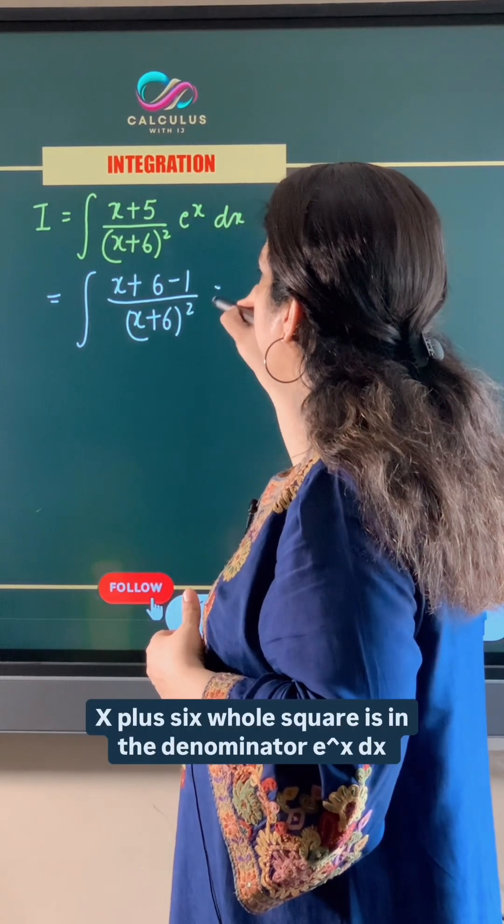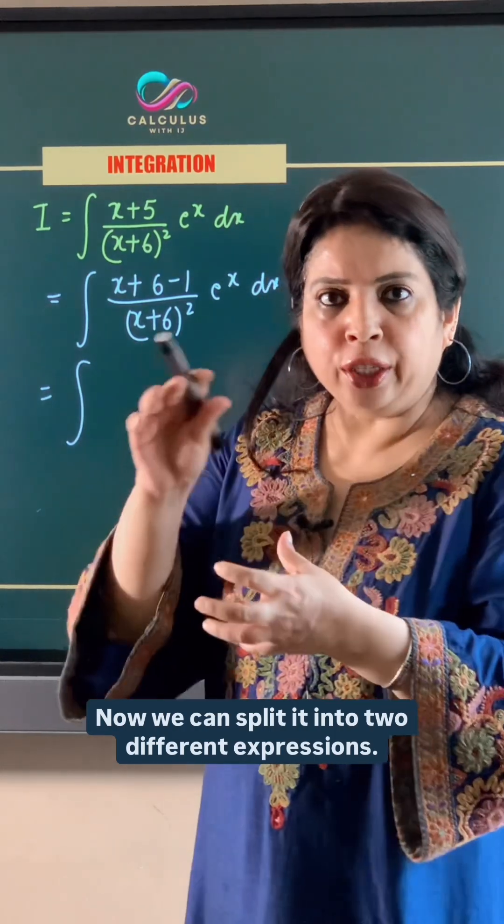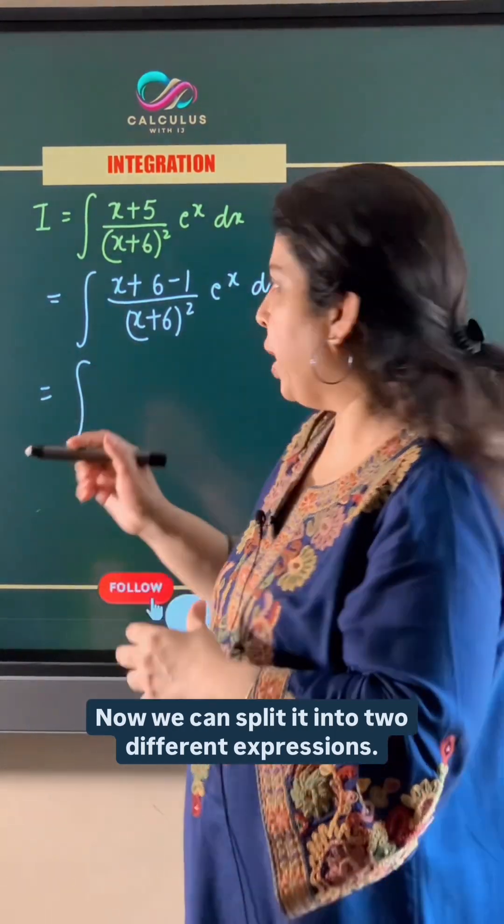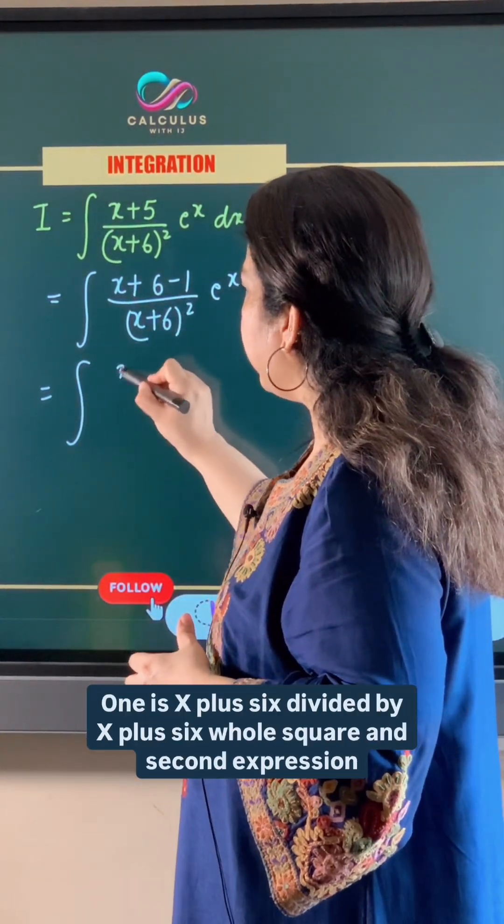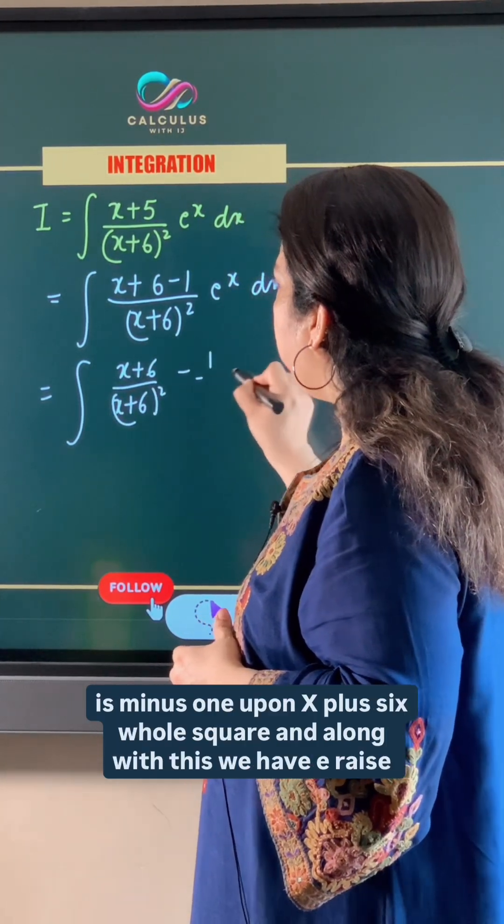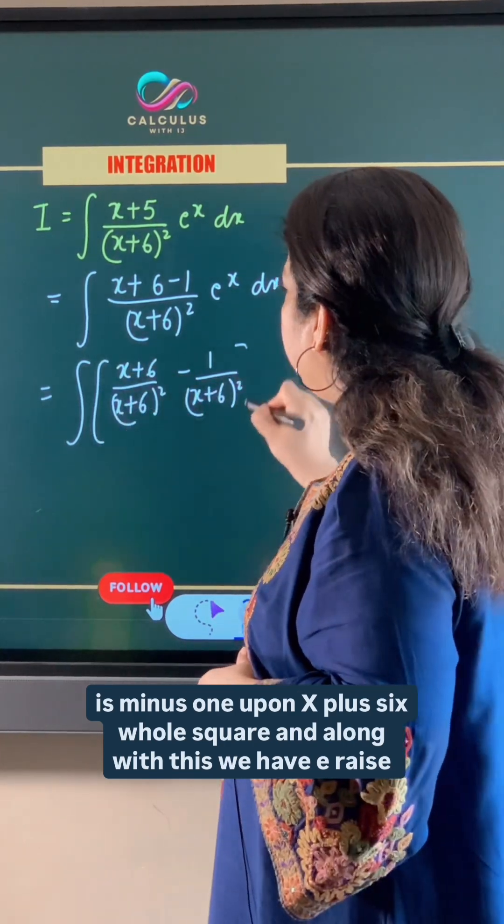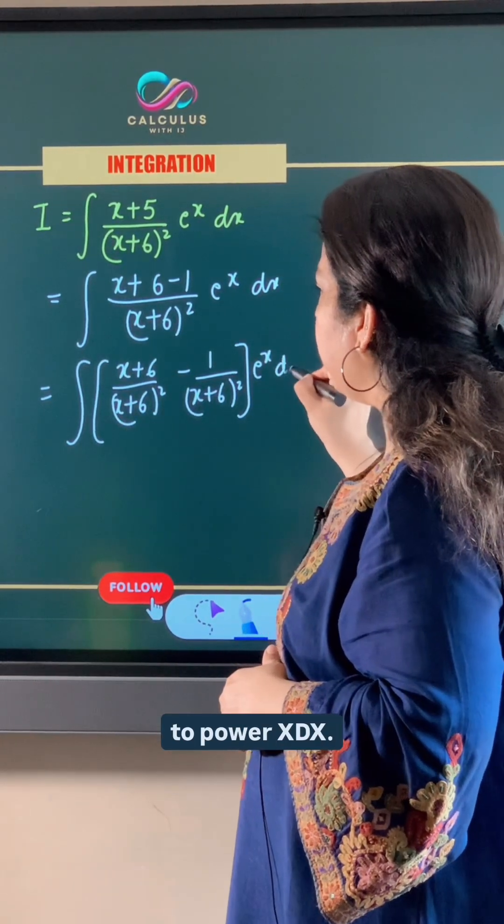x plus 6 whole square is in the denominator e x dx. Now we can split it into two different expressions. One is x plus 6 divided by x plus 6 whole square and second expression is minus 1 upon x plus 6 whole square and along with this we have e raised to the power x dx.